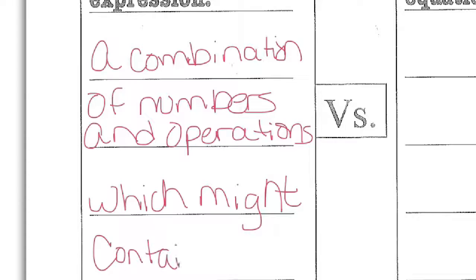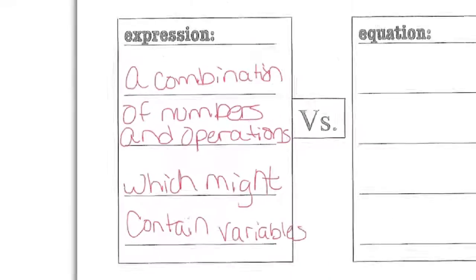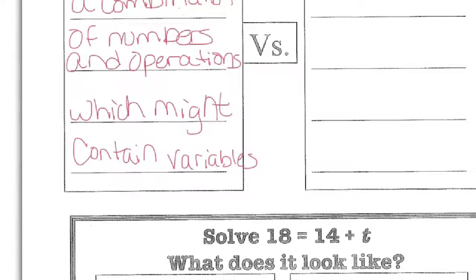So a combination of numbers and operations which might contain variables. And when they contain variables, we often call them terms. That's an expression. An example of an expression might be, let me write an example down here. An expression would just be 5 plus x minus 16. That's an expression.